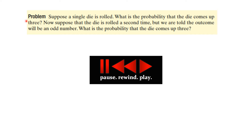Let's consider a problem. Suppose a single die is rolled. What is the probability that the die comes up 3? Now suppose that the die is rolled a second time, but we are told that the outcome will be an odd number — we know it is an odd number. Then what is the probability that the die comes up 3 in the second case? So you have two questions being posed here.